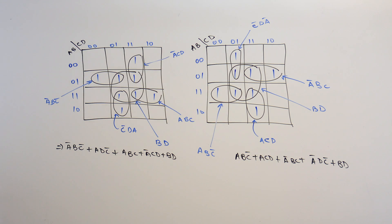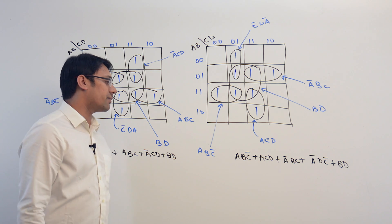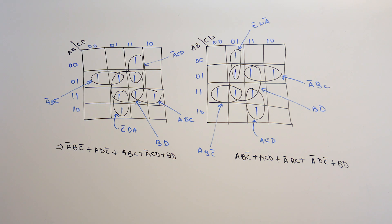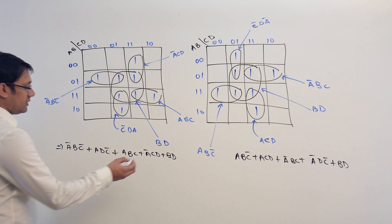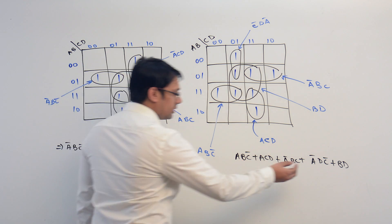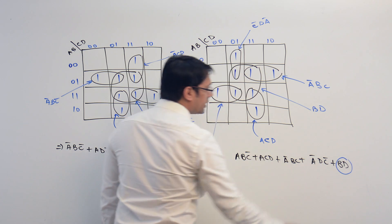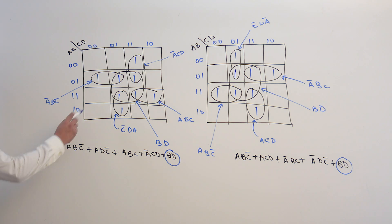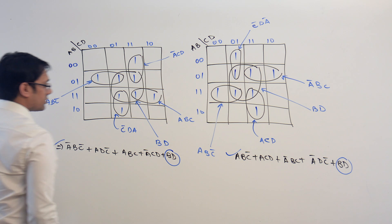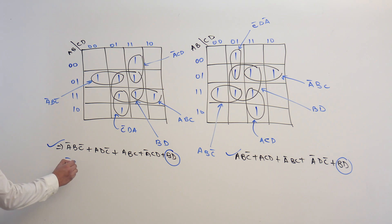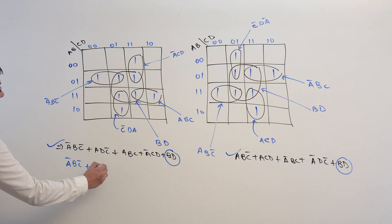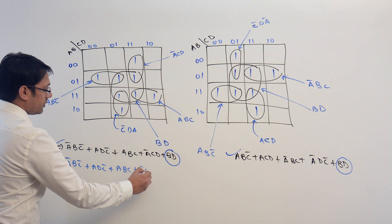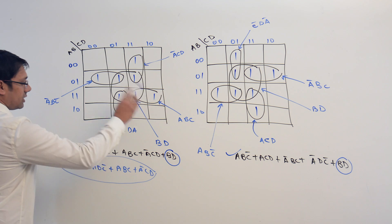Now by looking at these two solutions, you may think that these two solutions are going to give us the minimized equation, but these two equations are not minimized. Here in this equation, this BD — even if you add this BD or even if you don't use this BD in the solution equation, still the solution will be correct. That means we are not changing the logical value of the function; this is representing the same function.